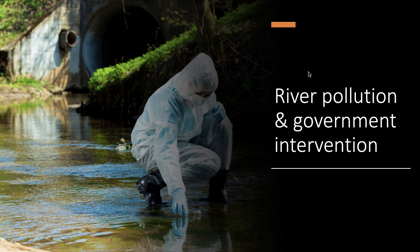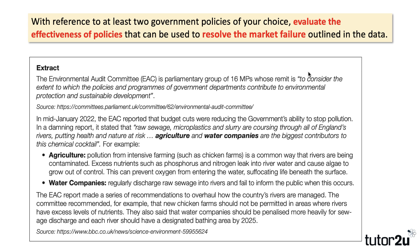Hi there, Geoff here with a worked 25-mark answer to a question on river pollution and government intervention. Here's the extract — we're going to test this in terms of the Edexcel exam board, but it might be the case that you could use this for other 25-markers set by other exam specifications. The extract looks at the extent of pollution created by agriculture, in particular things like intensive chicken farms, and also water companies discharging sewage into rivers, failing to inform the public whether this occurs.